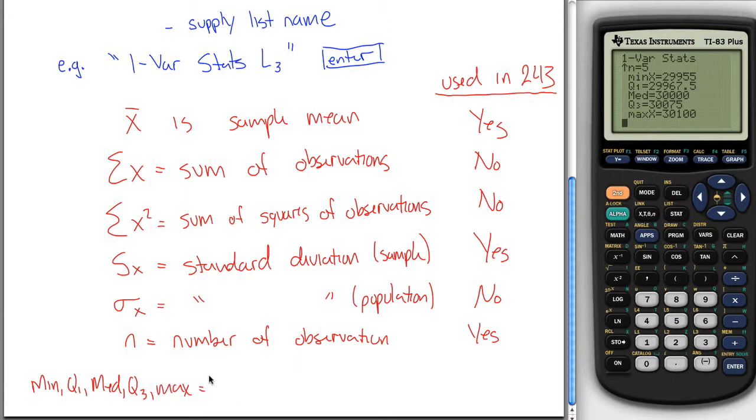This is called a five-number summary, and it is the smallest observation, the 25th percentile, first quartile. Maybe I'll just say it rather than write it. Your five-number summary gives you the smallest observation, your first quartile, your median,